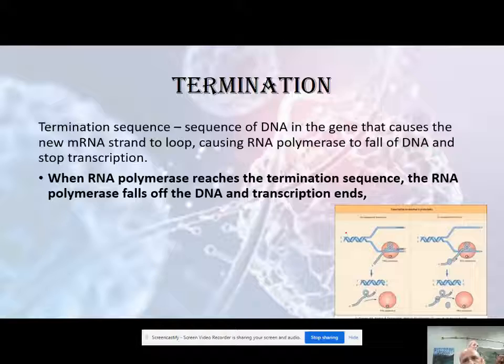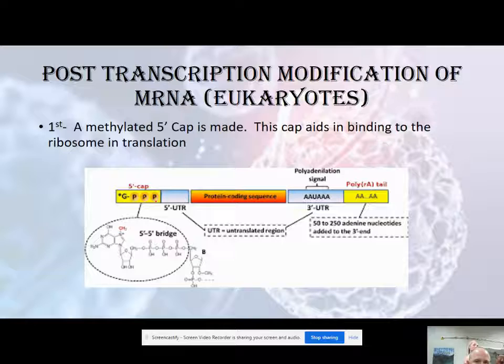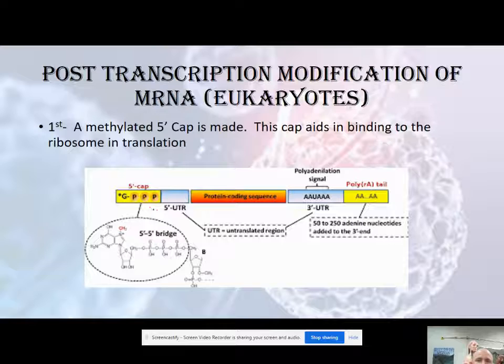There's some stuff that has to happen to our mRNA after transcription is complete — pre-translation but post-transcription. The first thing is we get a methylated five-prime cap: a guanine cap with some phosphates added to it, added to the front end of the mRNA. Its purpose is to help when we get to translation — it's going to help bind and guide this mRNA into the ribosome, and it's also going to help push this mRNA through the nuclear membrane to get outside of the nucleus.